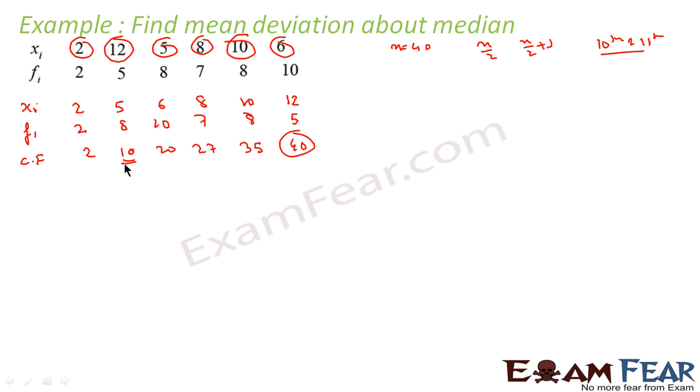That means 20th and 21st term we are looking for. I think I made a mistake here. n is equal to 40, so n by 2 is 20 and n by 2 plus 1 is 21. So I'm looking for the 20th and 21st terms, let me read it again clearly.